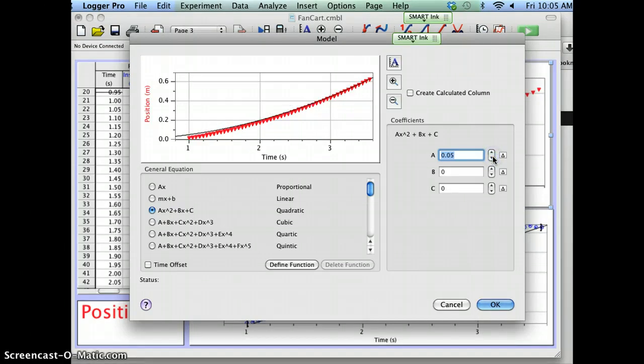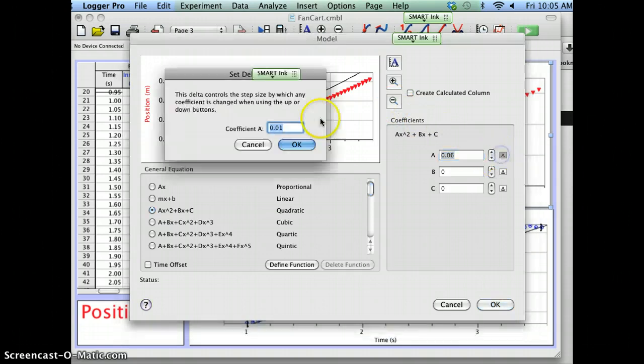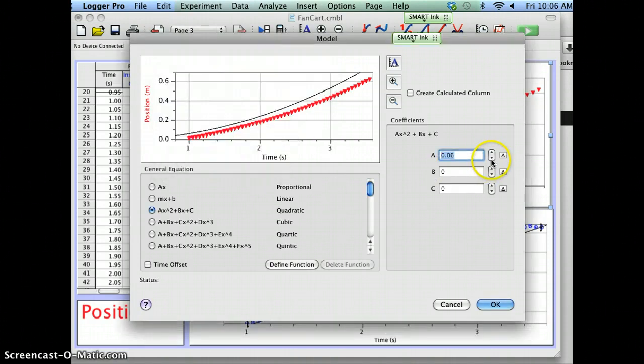See how I can't get it to fit? I need to make my interval smaller. So instead of 0.01, I'm going to make it 0.001 until I can fit my data. Are you guys digging? Basically, you're doing curve fitting.